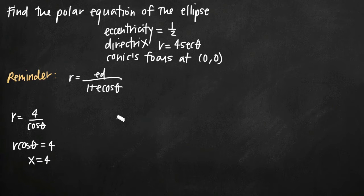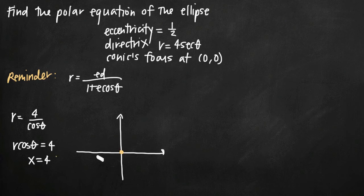Drawing a quick sketch of our graph, we know the focus is at the origin (0,0). The directrix is the line x = 4, which we'll draw here.